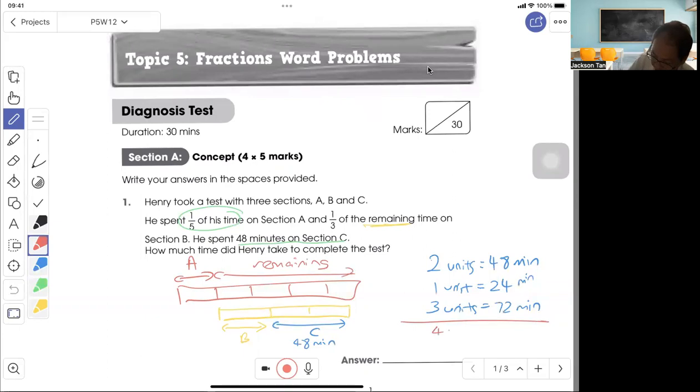So this four units already is 72 minutes, right? So four units is 72 minutes. Then I find one unit divided by four, that will give me 18. Then how much time to complete? So total five units. So 18 times five gives me 90 minutes. So the answer is it takes 90 minutes.